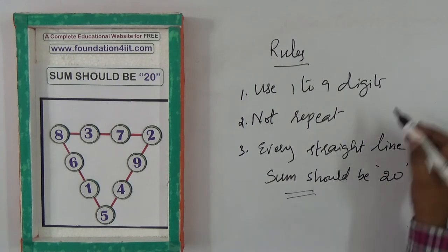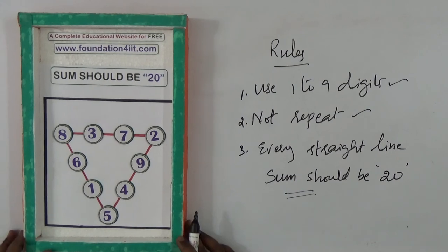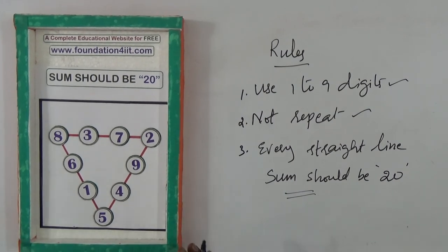This is one way. You can try many ways following these rules: use only one to nine digits, don't repeat any digit, and every straight line sum should be 20.